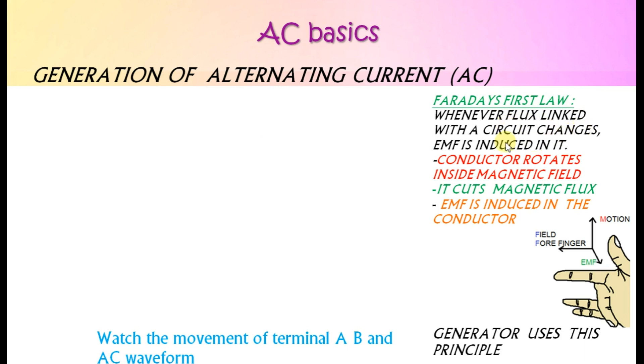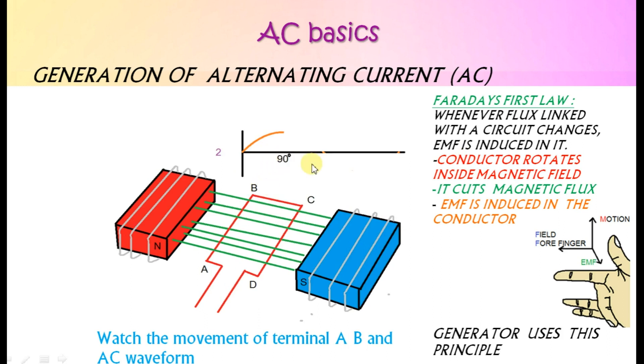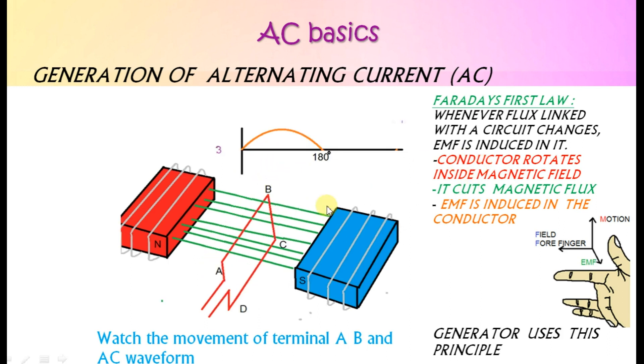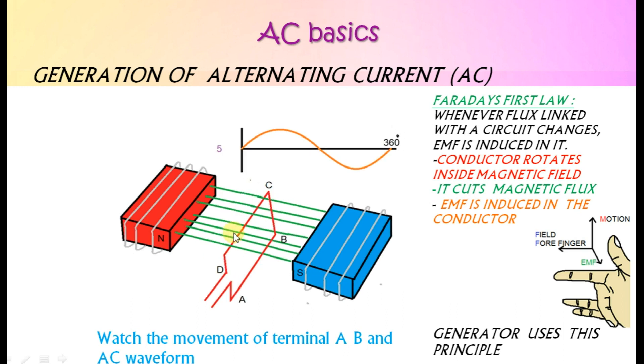Here, the conductor rotates inside a magnetic field and it cuts magnetic flux. Then, according to Faraday, an EMF is induced in the conductor. Generator uses this principle to generate AC voltage. The direction of EMF is given by Fleming's left hand rule.